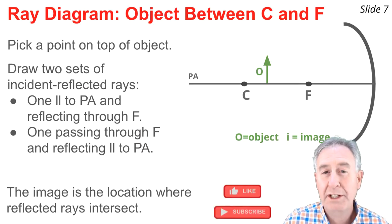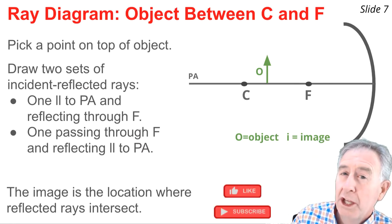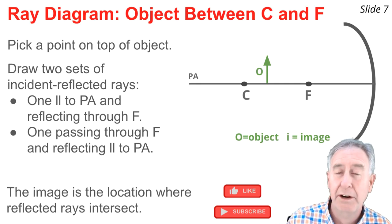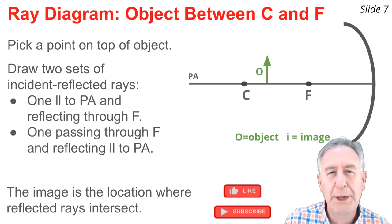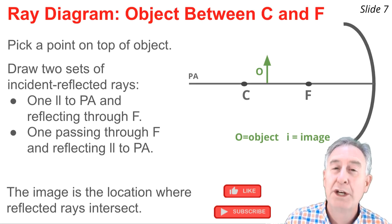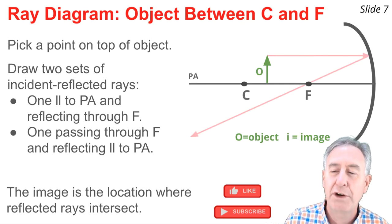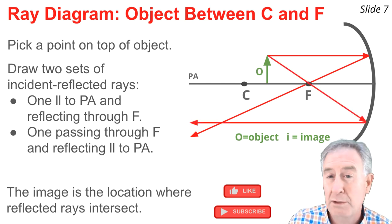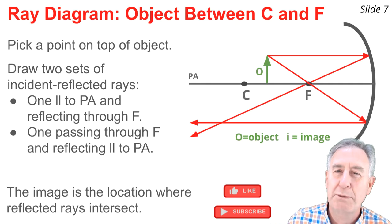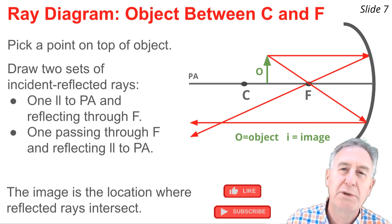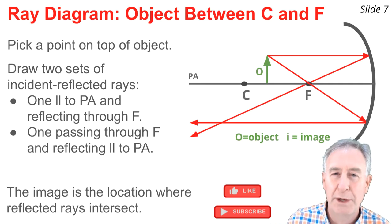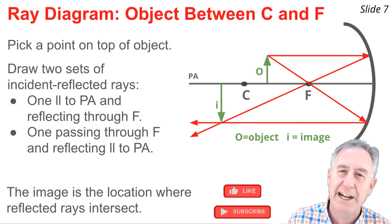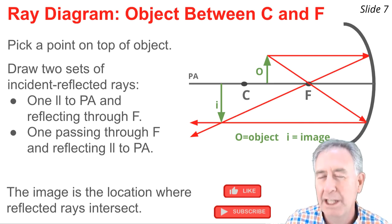In my third example, the object is placed between the center of curvature and the focal point — more than one focal length away, less than one radius of curvature from the surface of the mirror. Again, the same three steps: pick a point on top of the object and draw two sets of incident and reflected rays. The first travels parallel to the principal axis and reflects to the focal point. The second goes to the focal point first and reflects parallel to the principal axis. These two reflected rays intersect, and that intersection point is the image. The remainder of the image extends from the principal axis down to this point, labeled I.